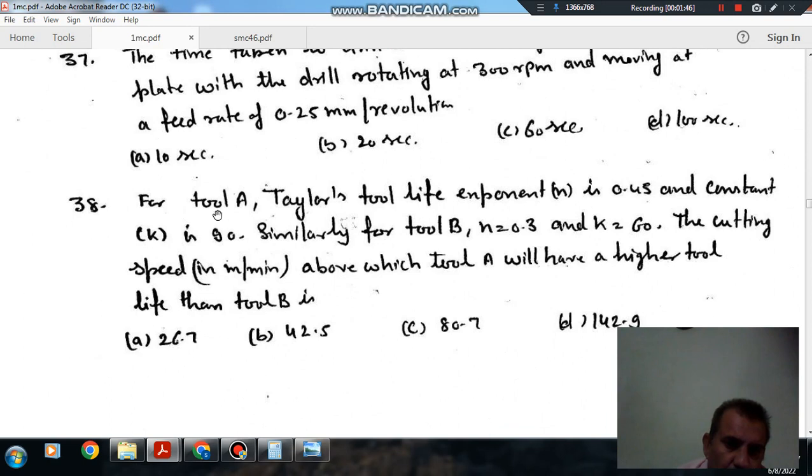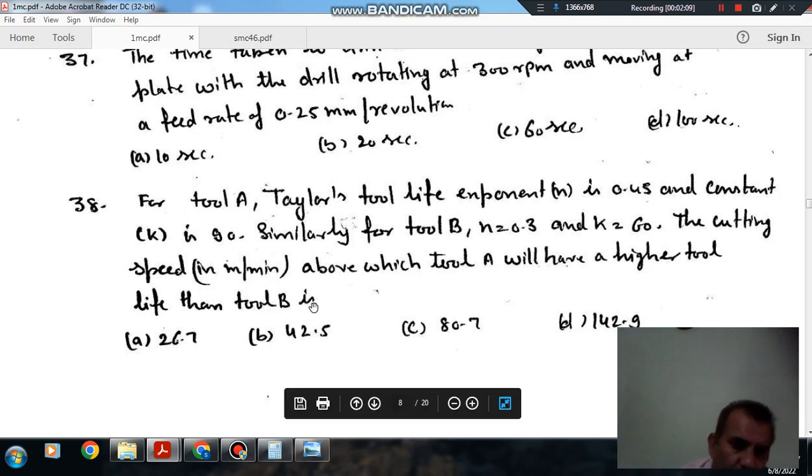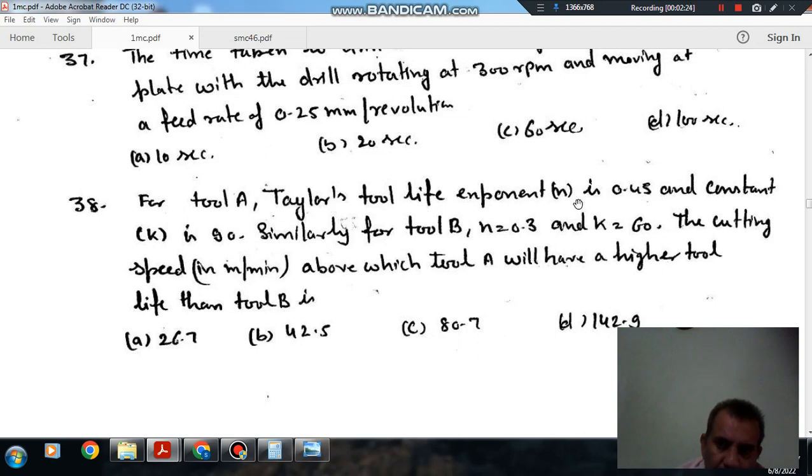Next question 38: For tool A, Taylor's tool life exponent is 0.45 and constant k is 90. Similarly for tool B, n is equal to 0.3 and k is equal to 60. The cutting speed in meter per minute above which tool A will have a higher tool life than tool B is: option a: 26.7, option b: 42.5, option c: 80.5, and option d: 142.9. So for tool A, n is 0.45 and k is given as 90.